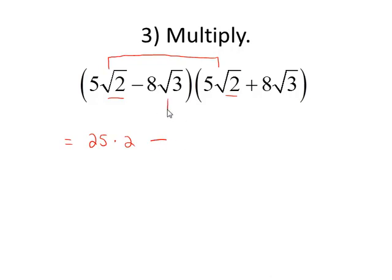Minus, we can multiply the last two terms, 8 times 8 is 64, and the square root of 3 times the square root of 3 is 3. Simplifying, this becomes 50 minus 192. And when we subtract, the result is negative 142.